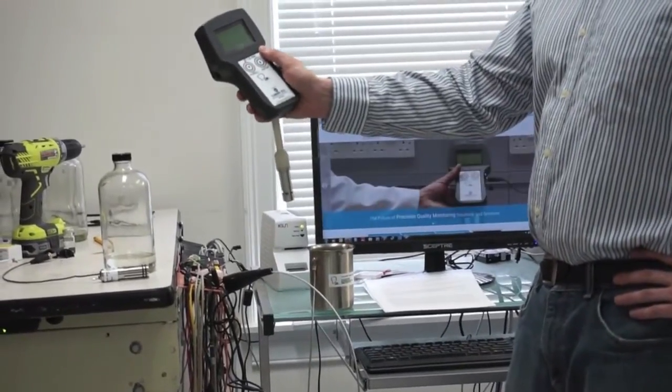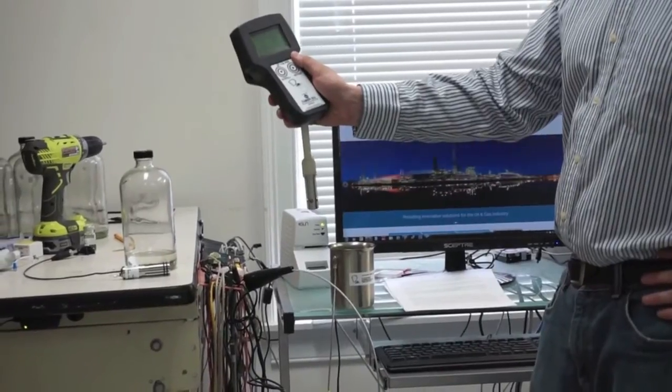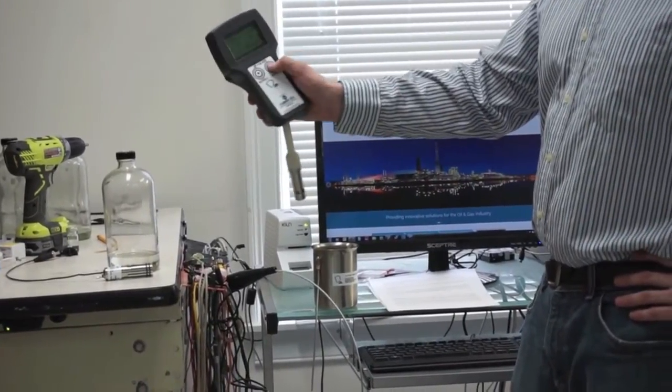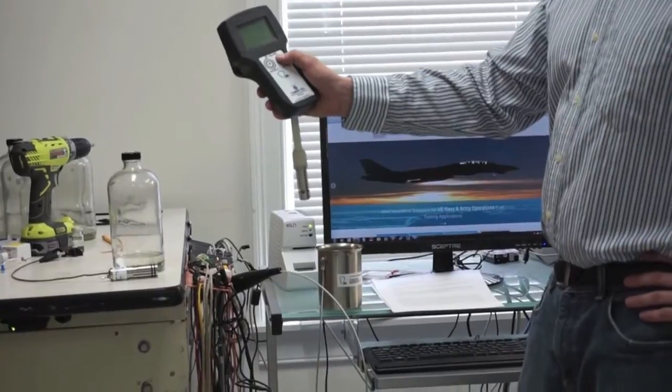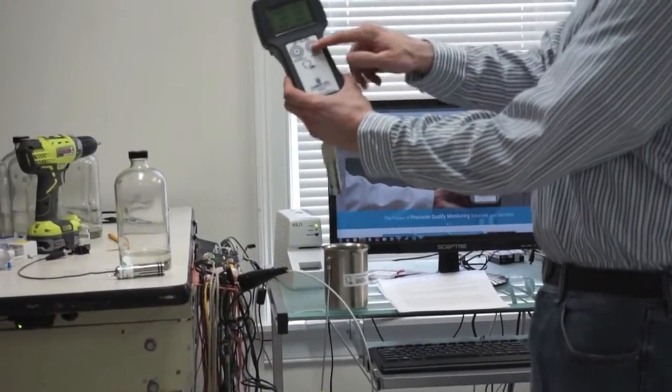Then you get to the main menu and you can either scroll to display previous values you've stored in the device, or hit the enter button to enter into the sample. The device is very simple, it only has two buttons.